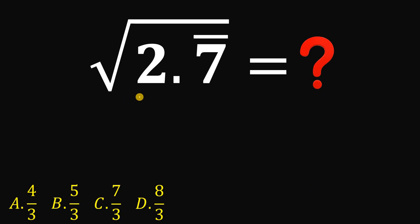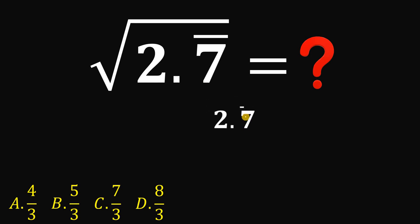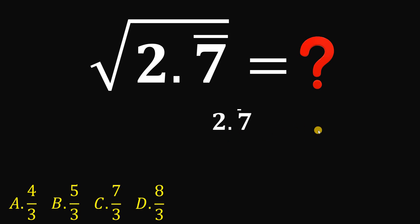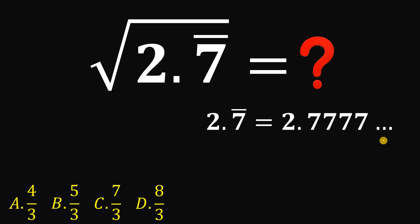Alright, so to answer this kind of question, the first thing we need to do is focus on the number 2.7 repeating. The question is, what does this symbol even mean? It means that we have an infinite number of 7s. So in short, 2.7 repeating is just 2.7777 until infinity — we repeat this 7 until infinity. To find the value of this number, let's call this x.